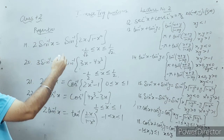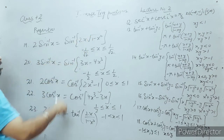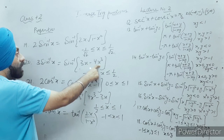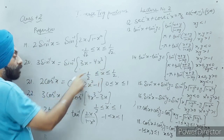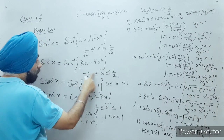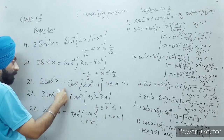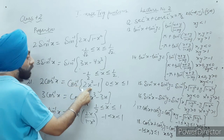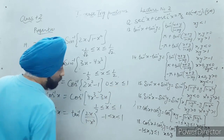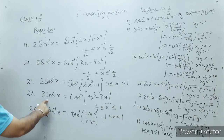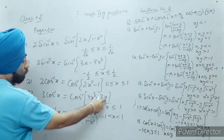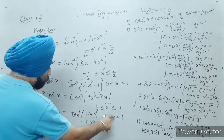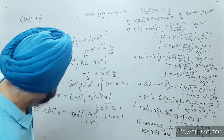2 tan inverse x comes from the formula sin 2θ equals 2 sin θ cos θ, giving sine inverse of 2x root(1 minus x²). For 3 sin inverse x, it uses sin 3θ equals 3 sin θ minus 4 sin³θ, therefore 3 sine inverse x equals sine inverse of (3x minus 4x³), where x belongs to minus one half to one half. Similarly, 3 cos inverse x equals cos inverse of (4x³ minus 3x). And 2 tan inverse x equals tan inverse of 2x upon (1 minus x²), for minus one less than or equal to x less than one.